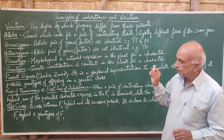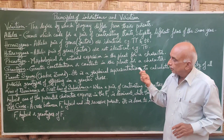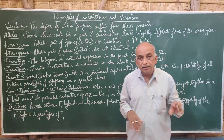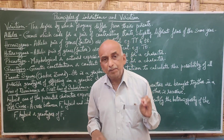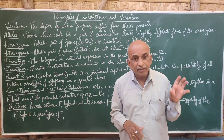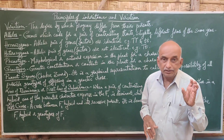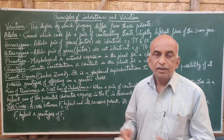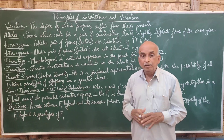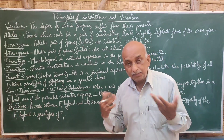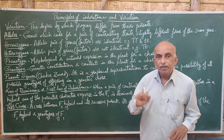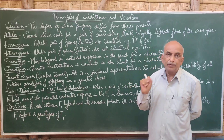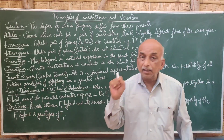Phenotype and genotype are two related terms often asked together, similar to homozygous and heterozygous. Phenotype means the external or outward expression — the morphological expression of a character in a plant or organism. What we see outwardly or externally in an organism is called the phenotype.